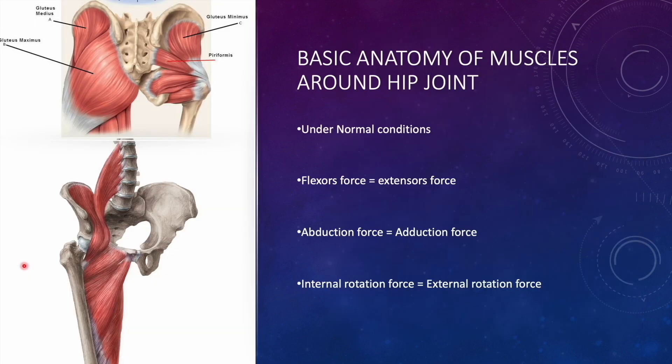Under normal conditions, muscle forces are well balanced by each other. To perform a particular motion, the muscles executing that motion must have higher force compared to the opposing muscles. For example, performing abduction at the hip joint results in higher abductor muscle force compared to the adductors. In equilibrium, flexor force equals extensor force, abduction force equals adduction force, and internal rotation force equals external rotation force.